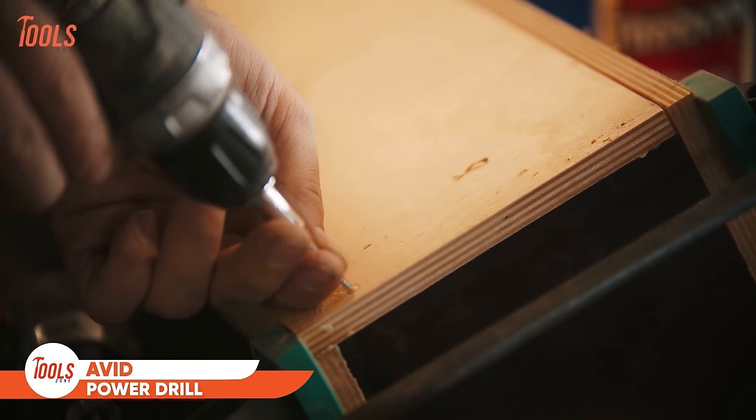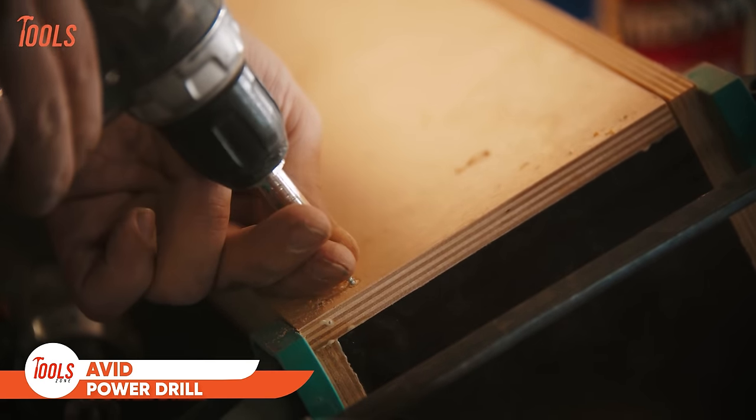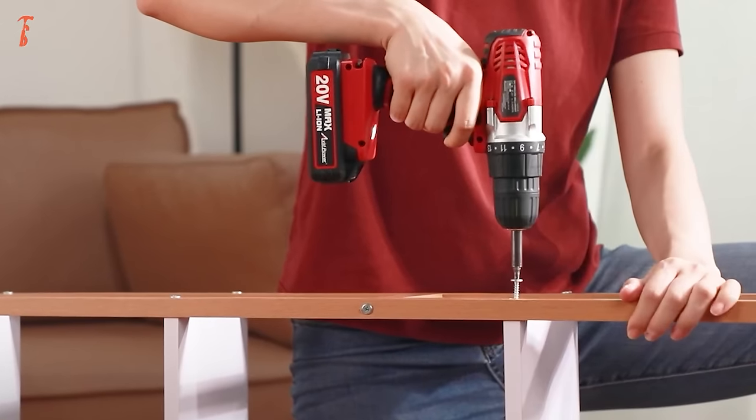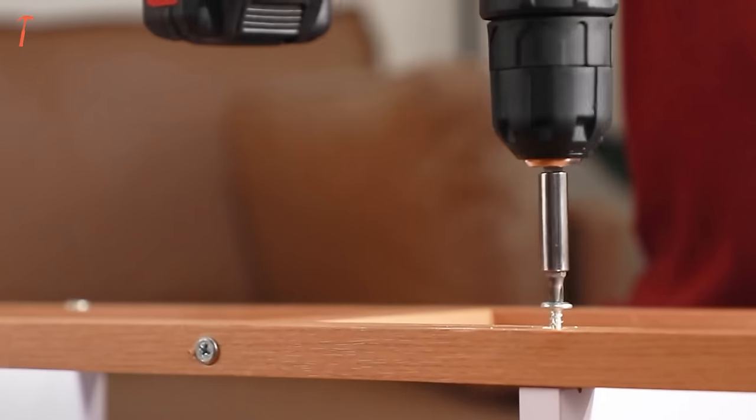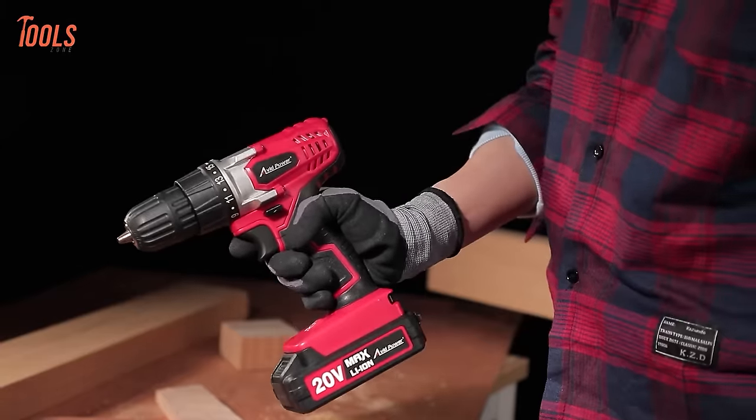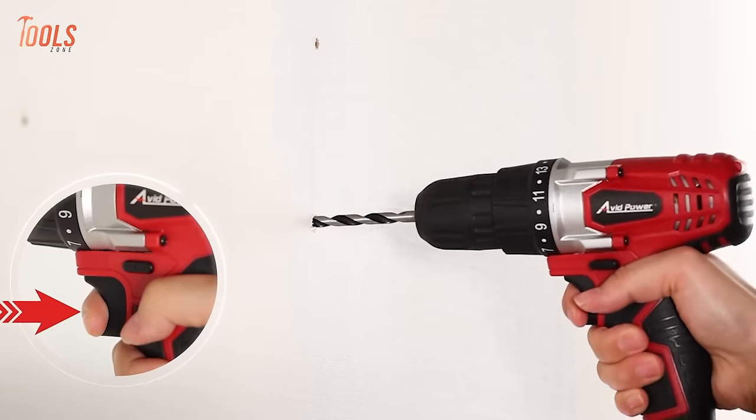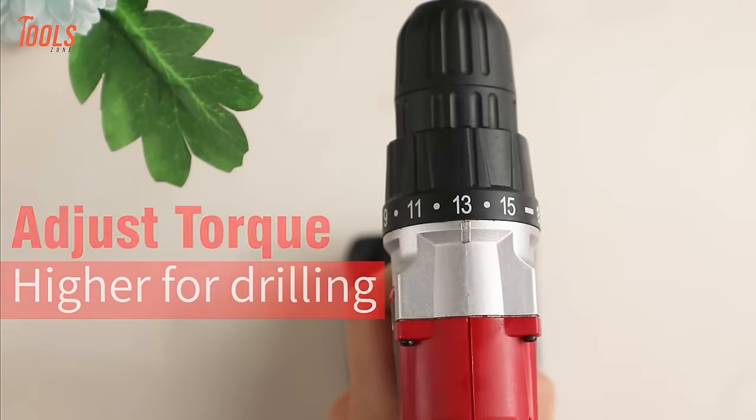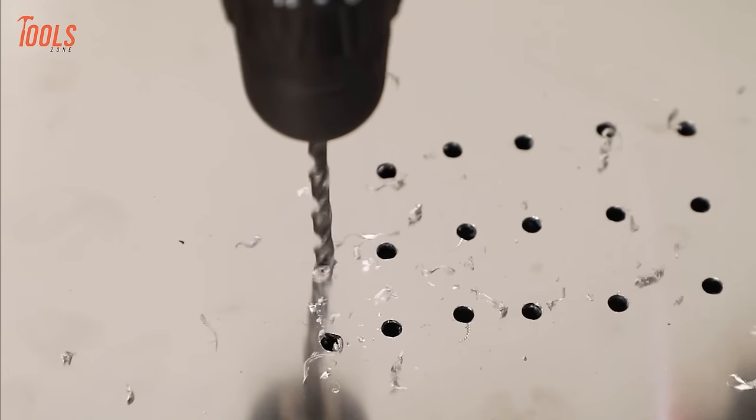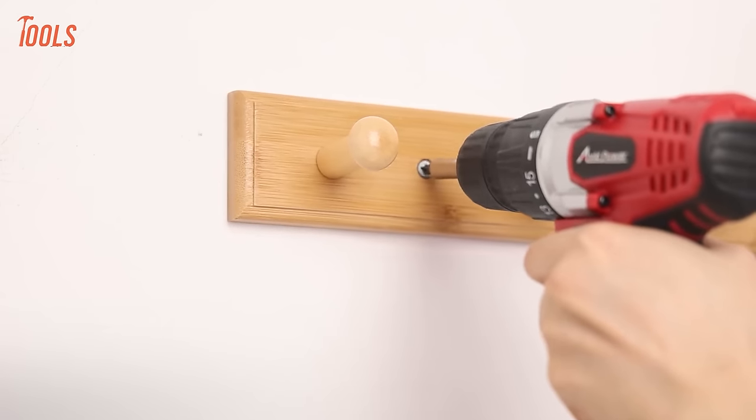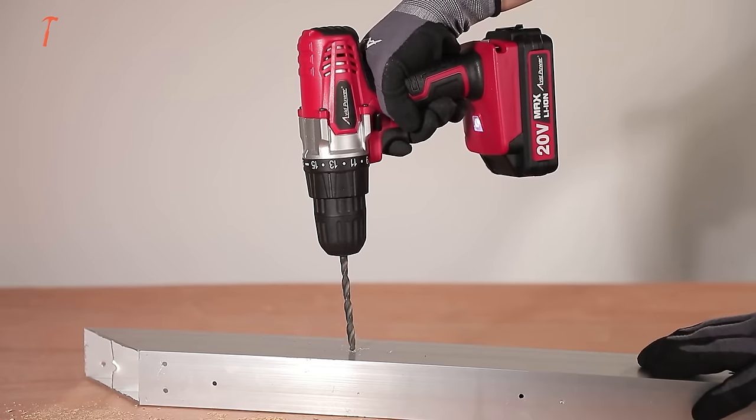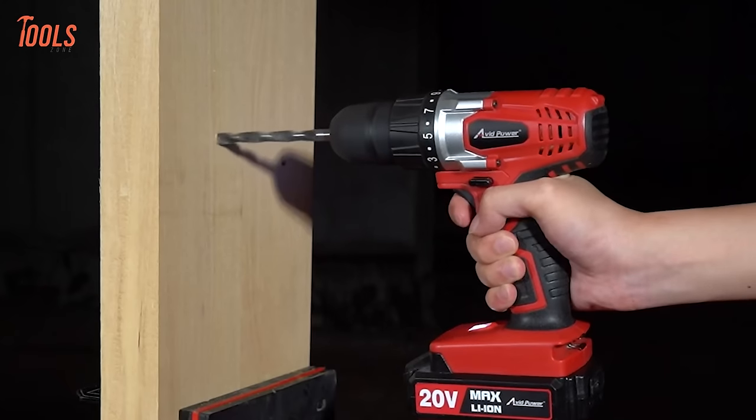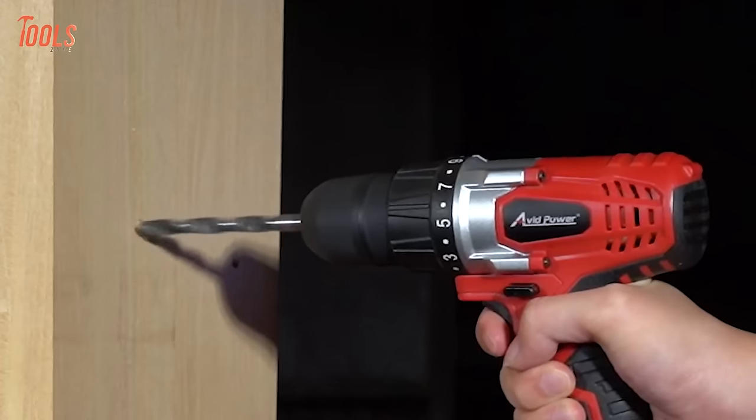When it comes to portability, cordless drills offer convenience around the house. So, next comes the Avid Power Drill, a quality power drill that is indispensable for any handyman's toolkit. This 20V drill packs plenty of torque to power through tough materials like wood and metal with ease. Its 15 plus 1 clutch settings give you precise control to prevent stripped screws. The compact, lightweight design minimizes user fatigue during extended use. Convenient features like LED lighting, variable speed, and a flexible shaft attachment boost efficiency on every job.